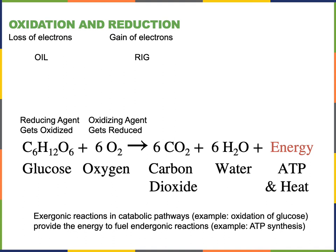Let's look at the example of the catabolic pathway for the breakdown of glucose to produce carbon dioxide and water. This will also require the reagent oxygen, because oxygen will be the oxidizing agent that can accept electrons transferred from glucose as glucose gets oxidized.